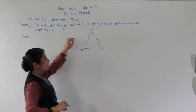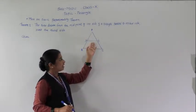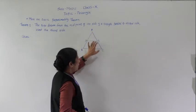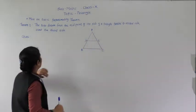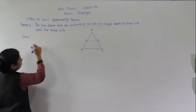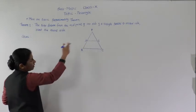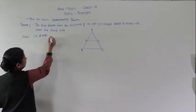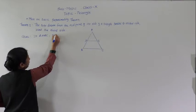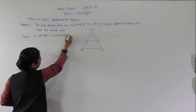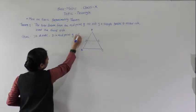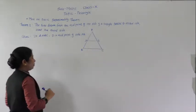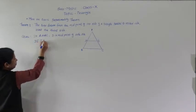Then it bisects the third side. We have to show that AE equals EC. What is given in this theorem? In triangle ABC, D is the midpoint of side AB, and DE is parallel to BC.